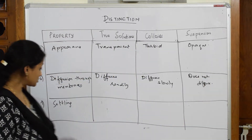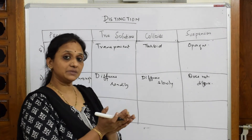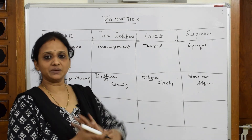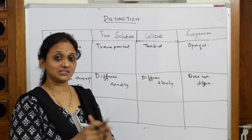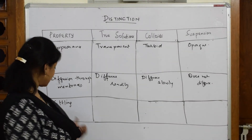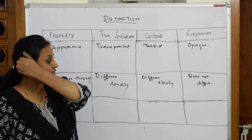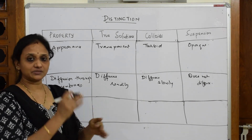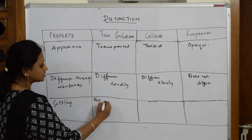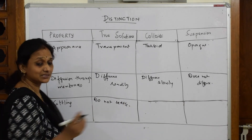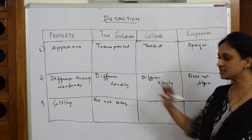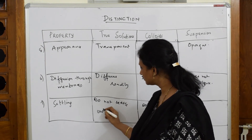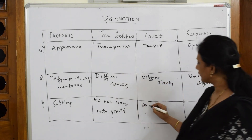The last and very important property is settling. When you place a true solution in a beaker and leave it under gravity, the particles do not settle because the particle size is very small. Similarly, colloids also do not settle under gravity.